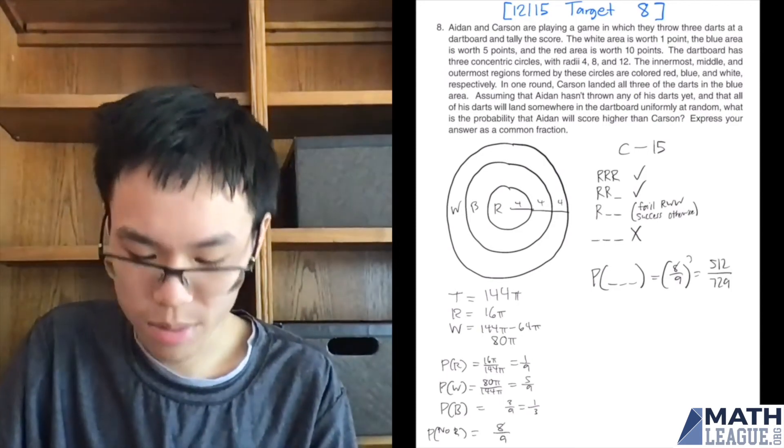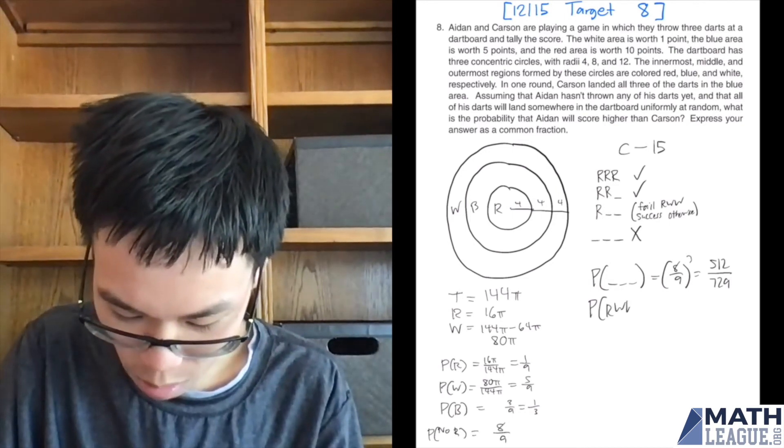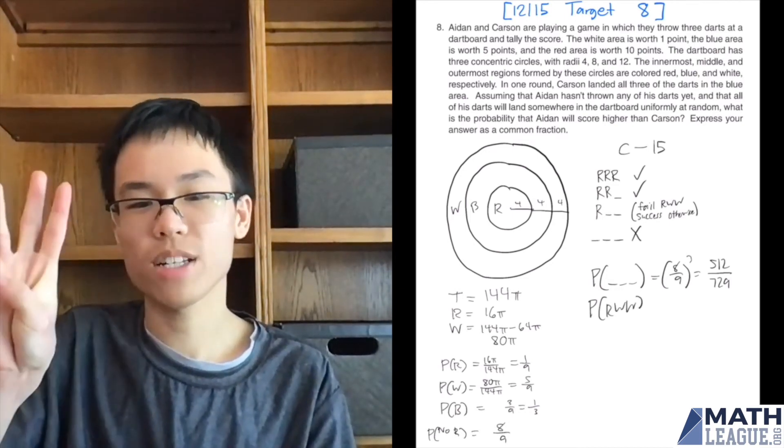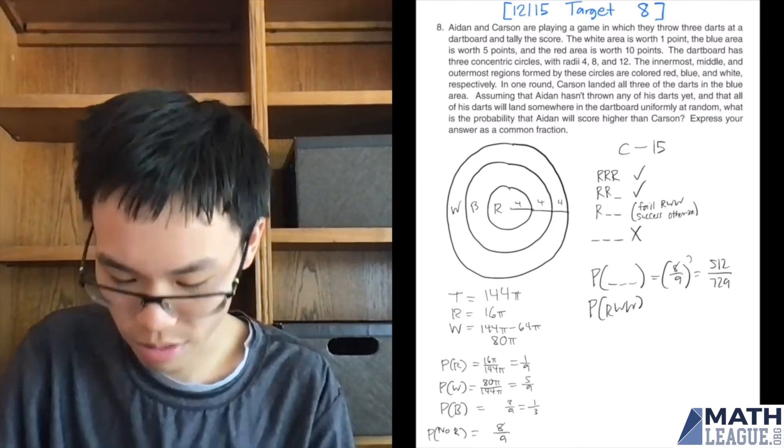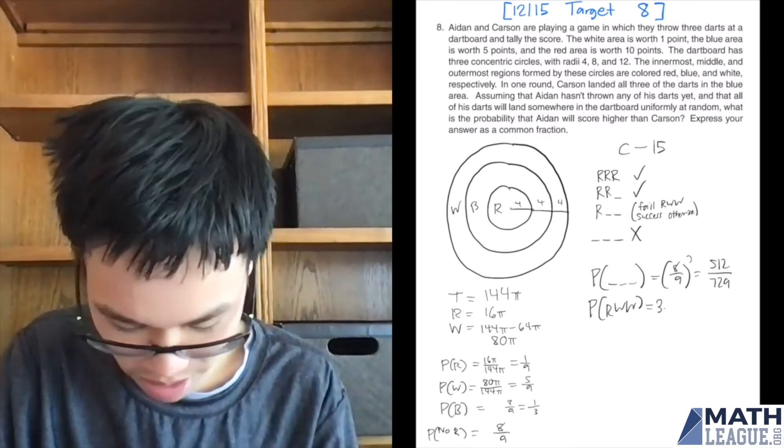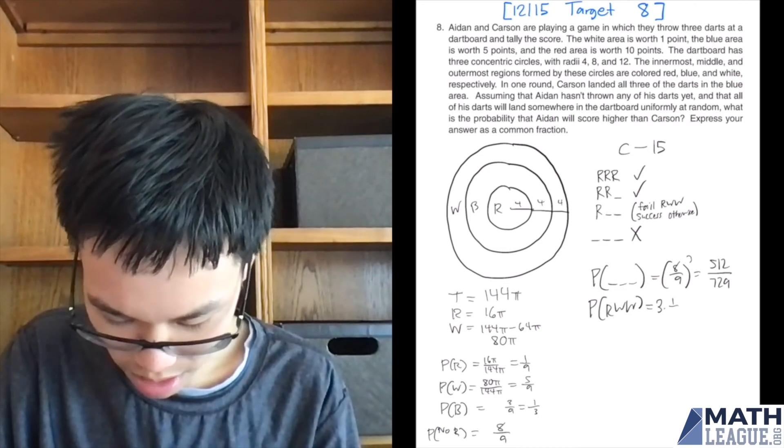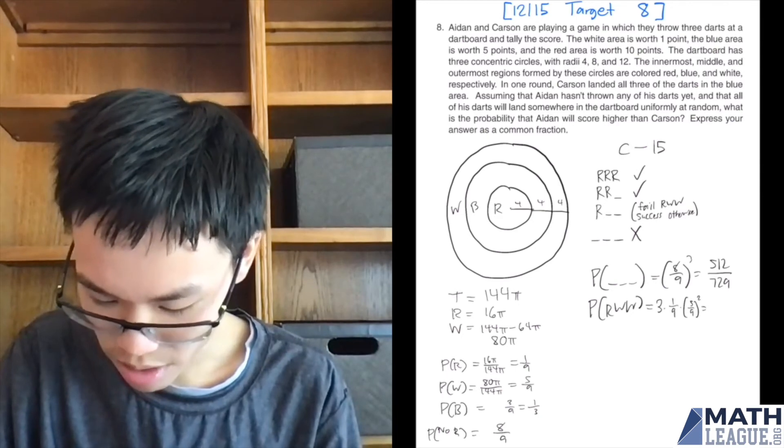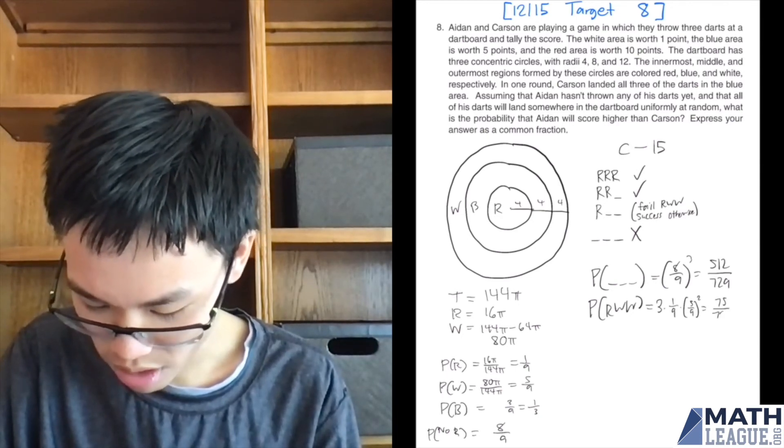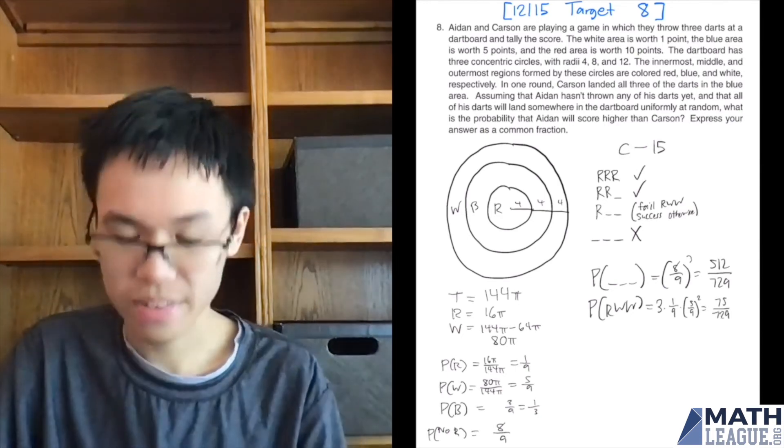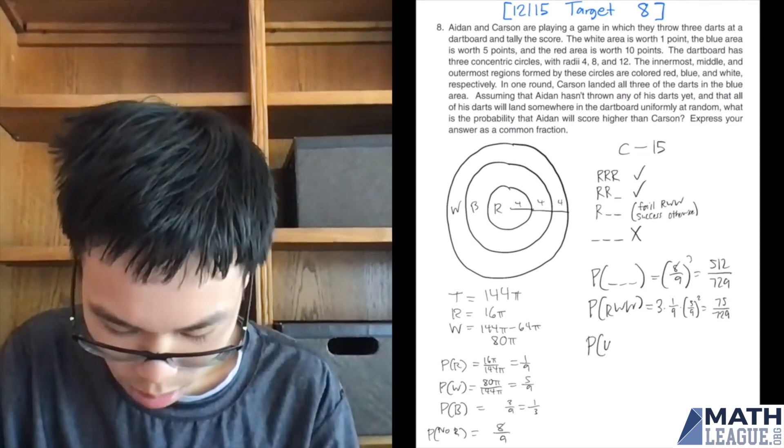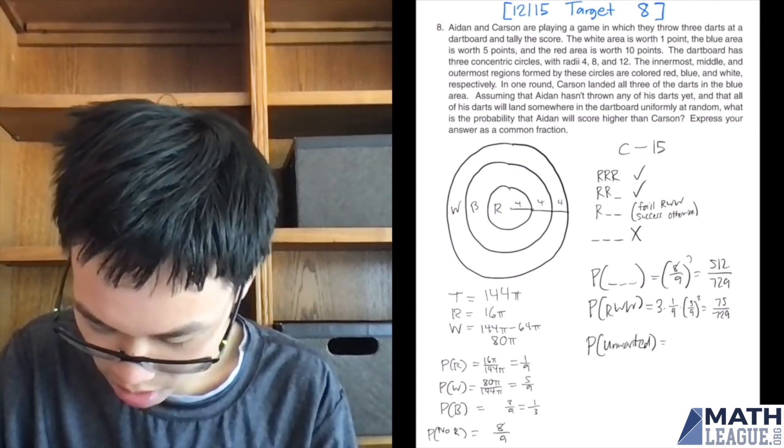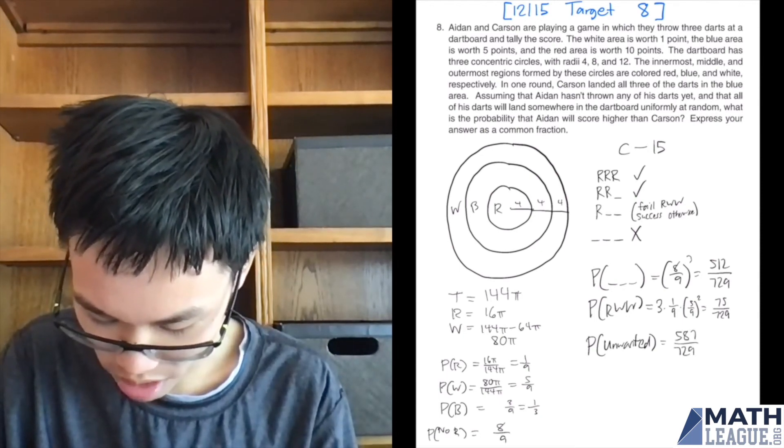The only other failing option is red, white, white, or any order of that. Three possible ways to order because of the placement of R, so you have to multiply by about three. Then three times one ninth times five ninths squared, and that's going to equal 75 over 729. Then you add them together to get the probability of the unwanted section is going to equal 587 over 729.